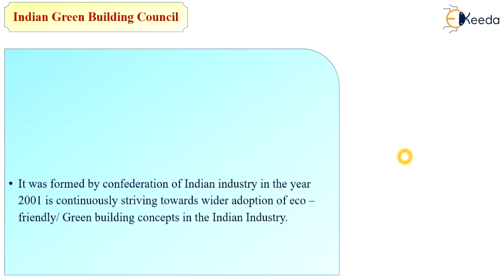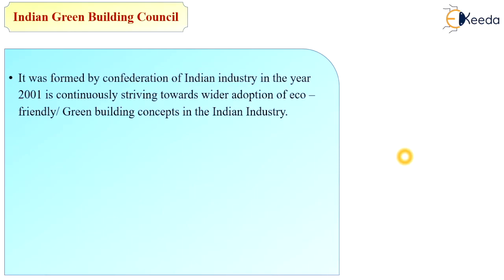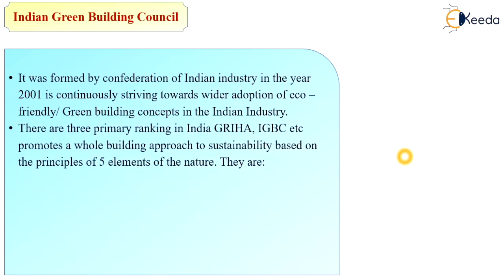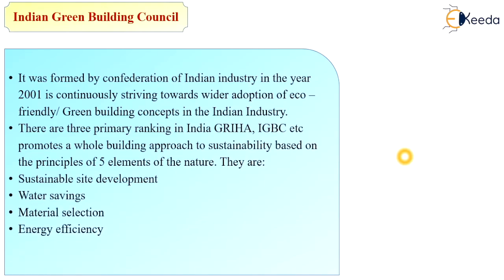The next practice is green building development. The Green Building Council of India was formed in 2001 and is continuously striving toward wider adoption of eco-friendly green building concepts in the Indian industry. There are three primary rankings in India: GRIHA, IGBC, etc., which promote a whole-building approach to sustainability based on five elements of nature: sustainable site development, water saving, material selection, energy efficiency, and indoor environmental quality.